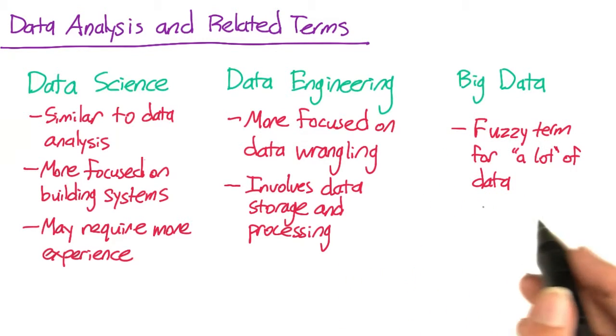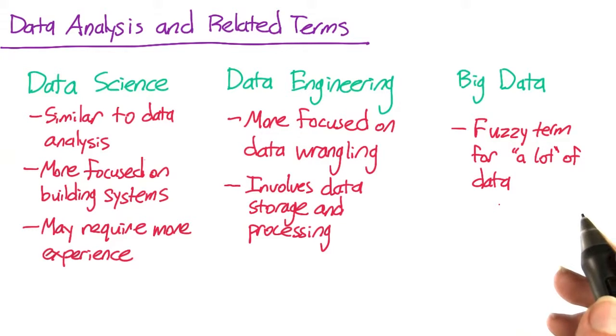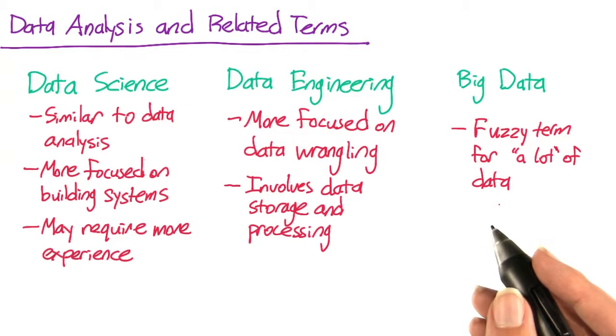Big data is a fuzzy term that refers to the fact that many companies today are dealing with a lot of data, terabytes, petabytes, and more. There's no rule for how much data you need before it is big, but certainly the amount of data we have today seems big compared to 10 years ago.